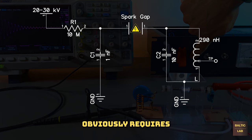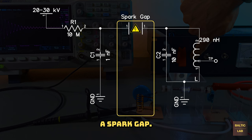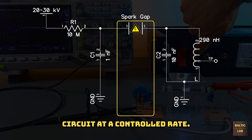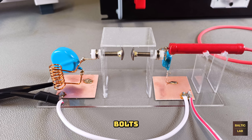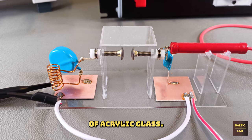A spark gap transmitter obviously requires a spark gap. Its main purpose is to dump the accumulated charge from C1 into the tank circuit at a controlled rate. The spark gap itself was constructed from carrier voltage bolts and a few pieces of acrylic glass.